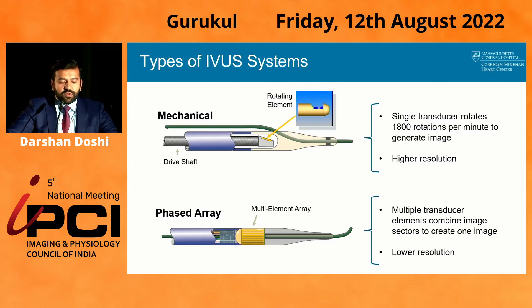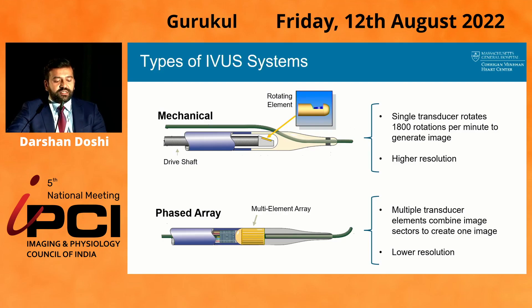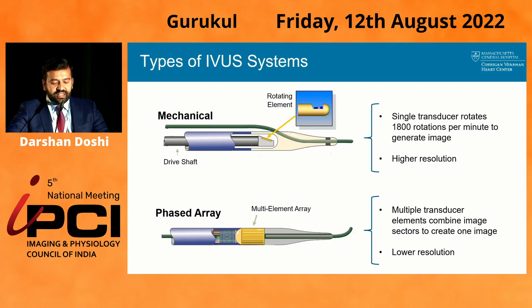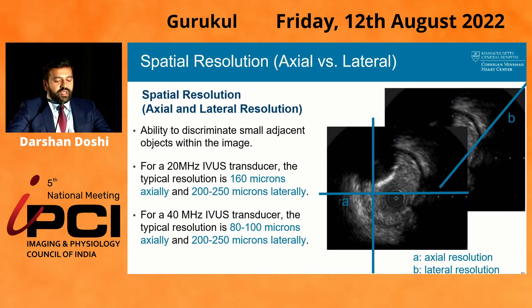The mechanical or rotational IVUS system allows for higher-frequency imaging. It uses a single transducer rotating at approximately 1,800 rotations per minute to generate the image. Because of the higher frequency, it achieves much better resolution. The phased array, or plug-and-play IVUS, uses multiple transducer elements that each take a sector of the vessel, fired sequentially so it appears to rotate — but because of how that's done, you get a lower resolution.